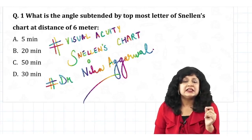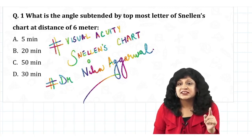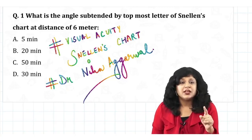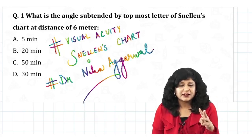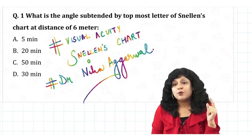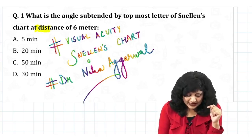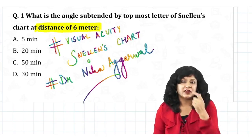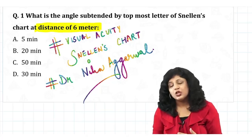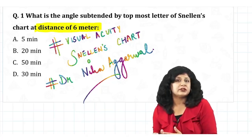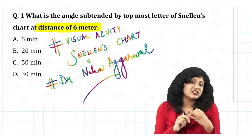What is the angle subtended by the topmost letter of the Snellen's chart at a distance of 6 meters? Your options are 5 minutes, 20 minutes, 50 minutes, and 30 minutes. The most important catch point of this question is that you have to see at how much distance they are asking — if they have not mentioned this distance, your answer will also change. You have to see which letter they are asking about and at how much distance.